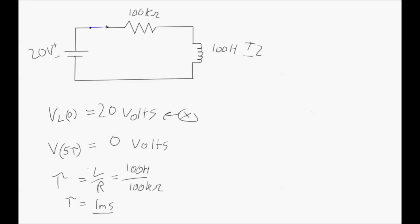After five time constants have expired, the voltage is going to drop down to zero. Remember, this is opposite from a capacitor. A capacitor starts at zero volts and after five time constants goes up to E volts — the voltage of the power supply. With inductors it's the opposite: it starts at full voltage E and drops down to zero volts after five time constants.